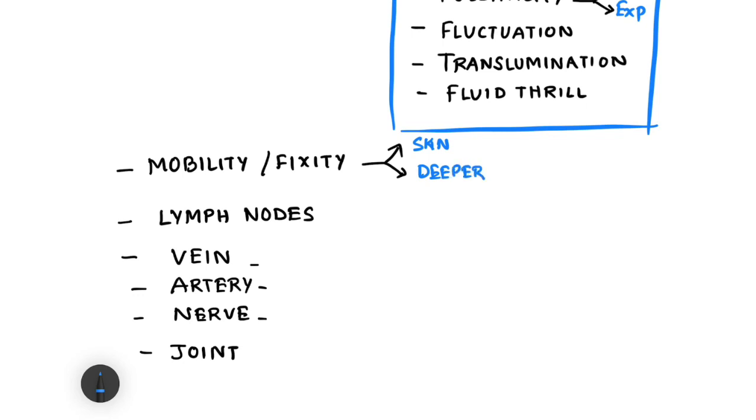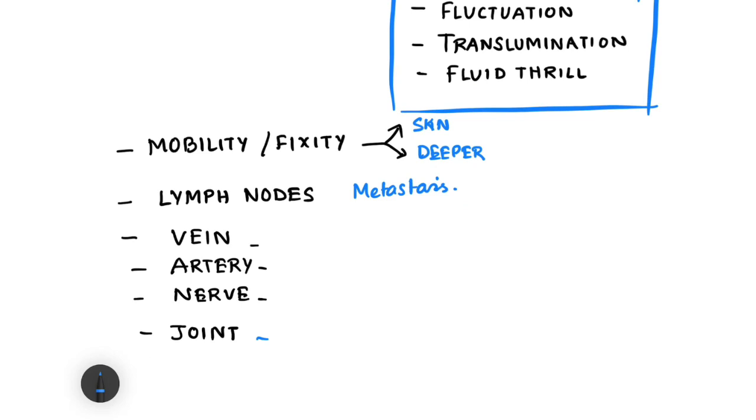Then we assess for any lymph nodes in the periphery or surrounding area. Lumps with surrounding lymph node enlargement or palpable lymph nodes generally indicate metastatic tumor, so we check for metastasis in lymph nodes. We check for any involvement of vein, artery, or nerve. Finally, if the lump is associated with a joint, we also try to palpate the joint and understand whether there is any abnormality. This is what we try to understand in palpation of a lump.